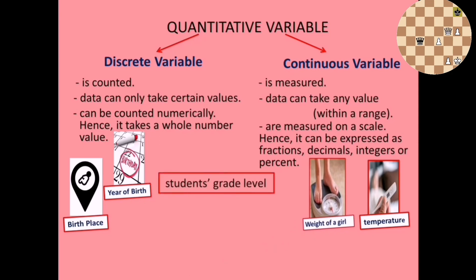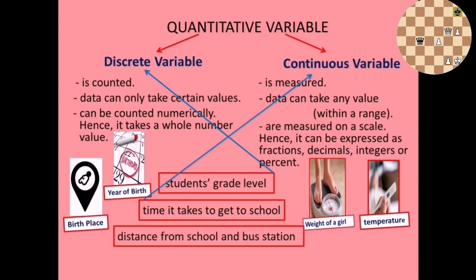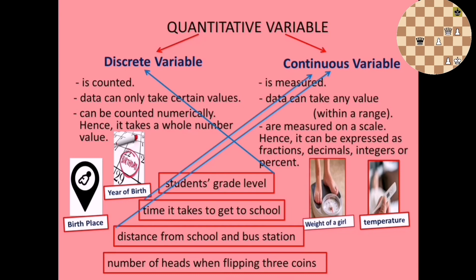Students' grade level — Grade 1, Grade 2, Grade 3 — is exact, so it is discrete. Time to get to school could be one minute and two seconds or five minutes and some seconds, which is not exact, making it continuous. Distance from school to bus stations could be 2.1 or 3.1 kilometers, so it is continuous. Number of heads when flipping three coins can only result in an exact whole number, so it is discrete.